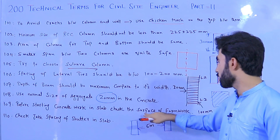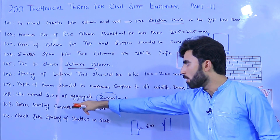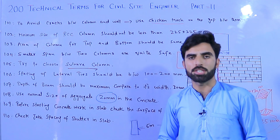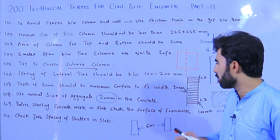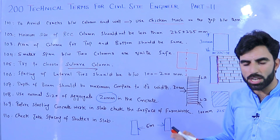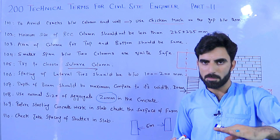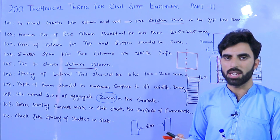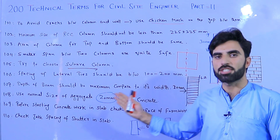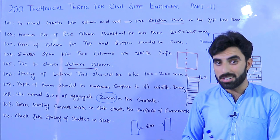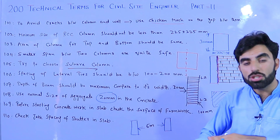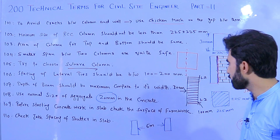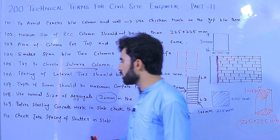Term 109: Before starting concrete work, the surface of the formwork should be checked. The surface should be clean — there should not be any stones, other aggregates, oil, or nails present. The surface of the formwork must be clear before starting concrete work.